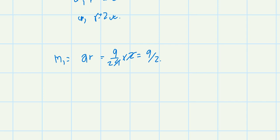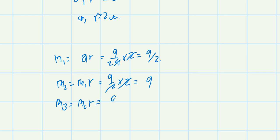9 by 2 times 2 is equal to 9. M3 is equal to M2·R, so 9 times 2 is equal to 18. See you later.